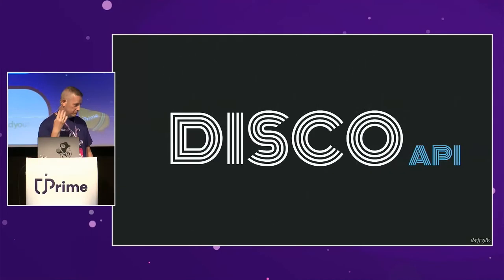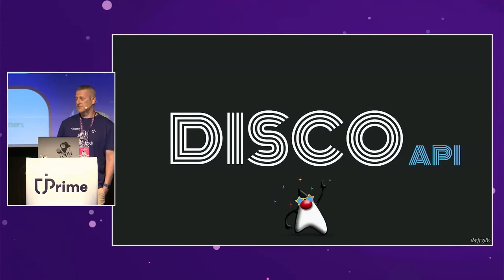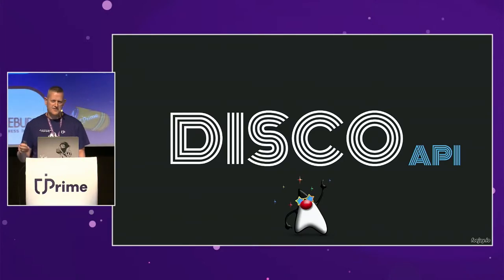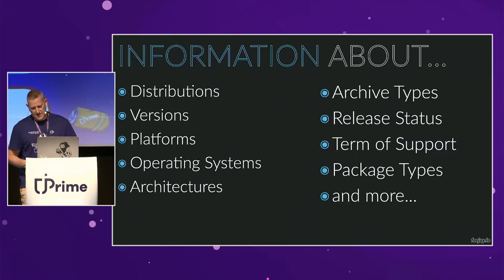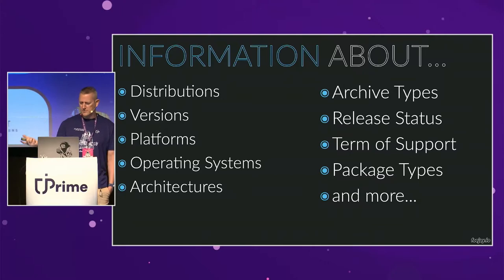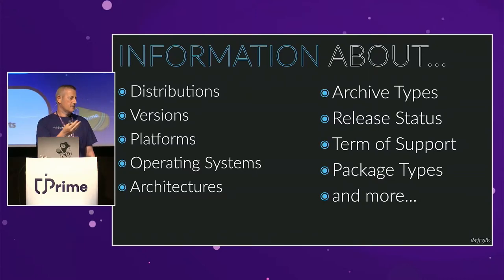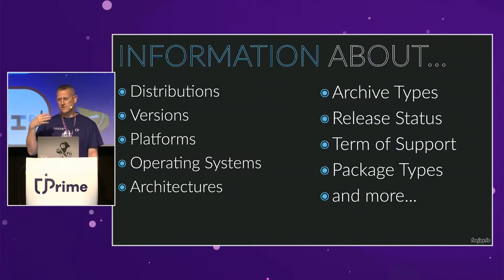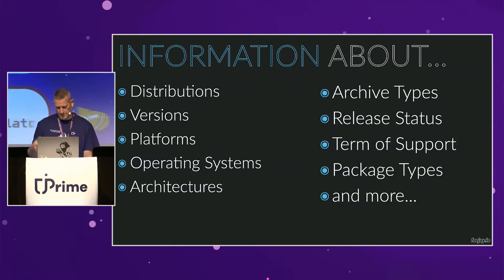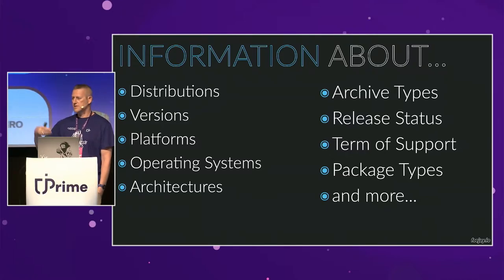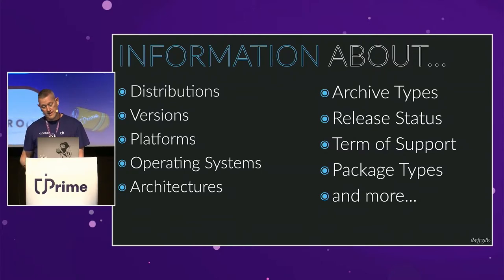The idea was: wouldn't it be great if we had one API to serve all the different distributions available, no matter which version, which distribution, whether it's based on GraalVM or OpenJDK? That was the idea behind the Disco API. 'Disco' stands for Discovery API, but I thought Disco sounds better. It serves information about distributions, version numbers, platforms, operating systems, architectures — like when the Mac M1 came out, how did you know which distribution offers a version for it? The API also covers archive types (DMG, DEB, RPM, ZIP, MSI), terms of support (long-term stable and short-term stable), and package types.